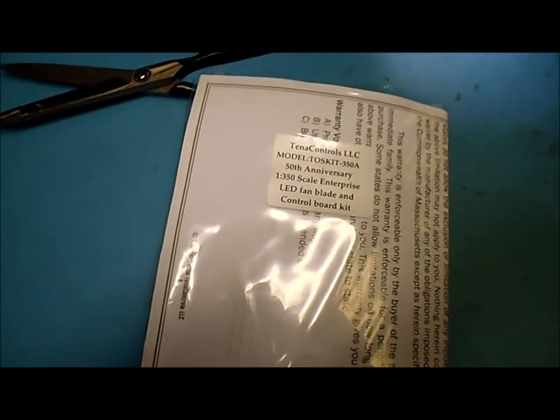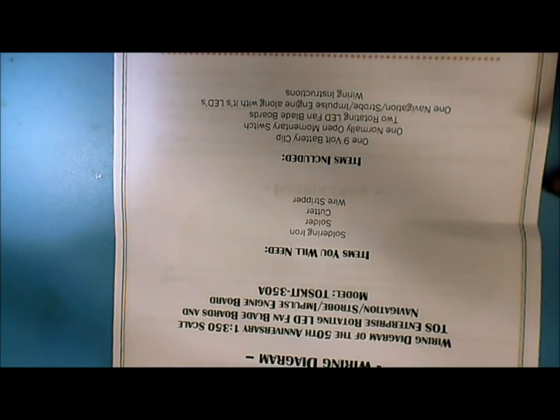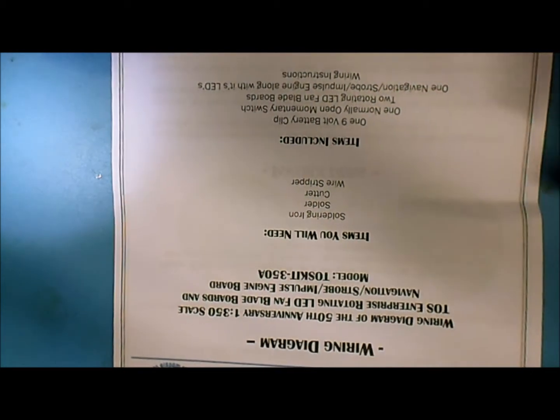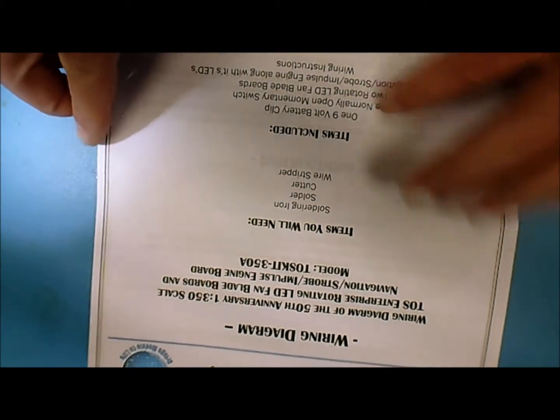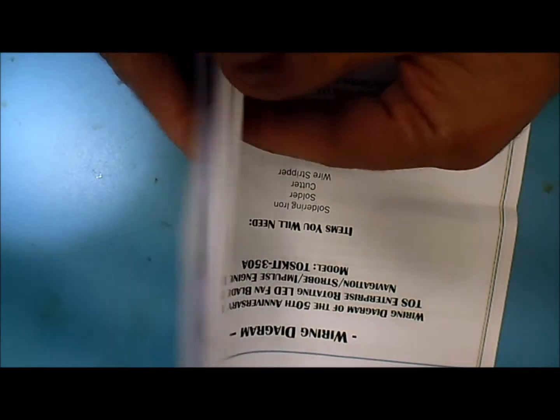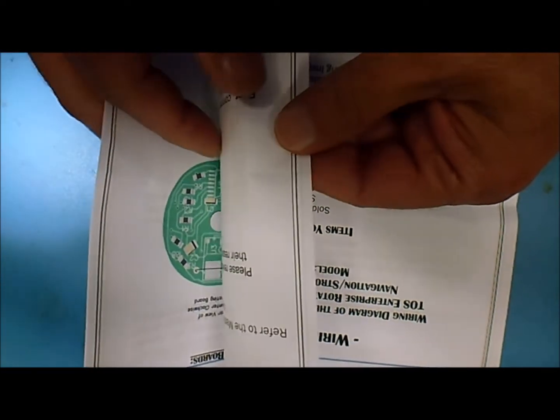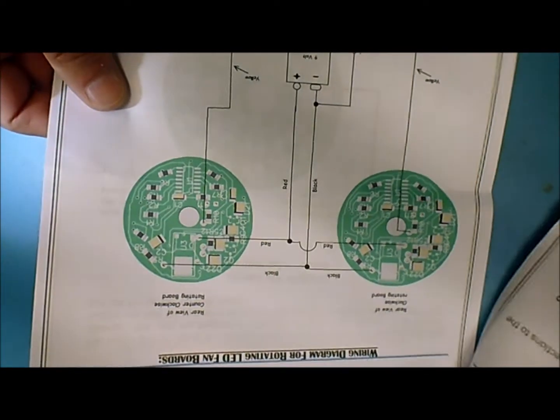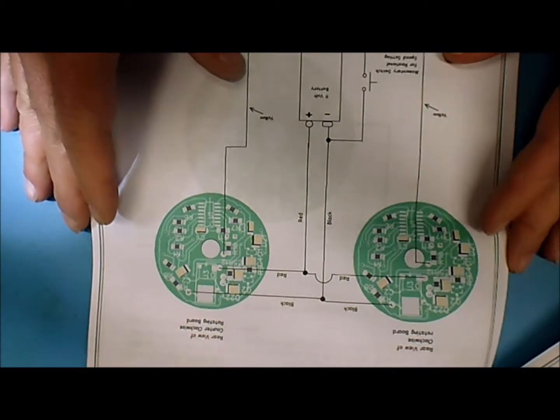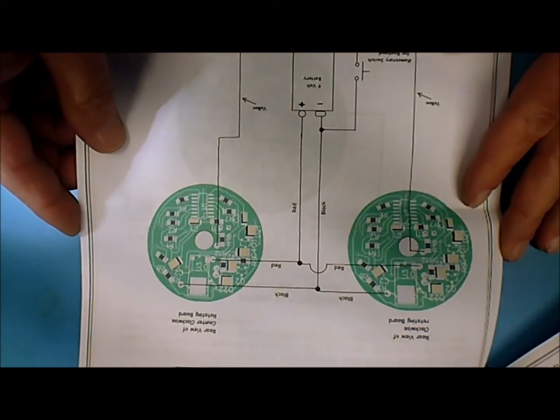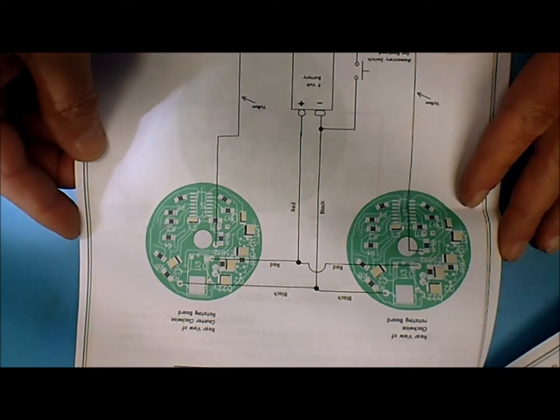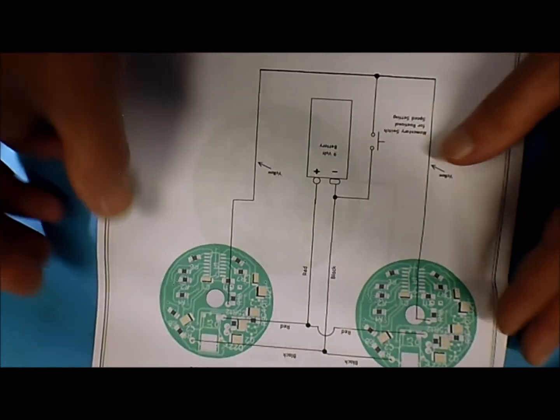Okay guys, we're back. This is the 50th anniversary TOS LED version of the kit that we make. Let's talk about the rotating facade boards - that's the back side, so that's the instruction.